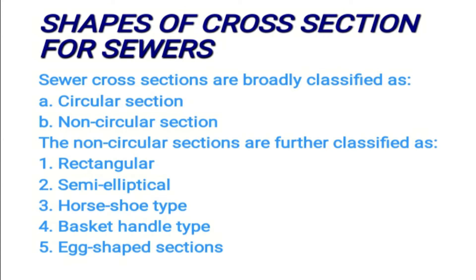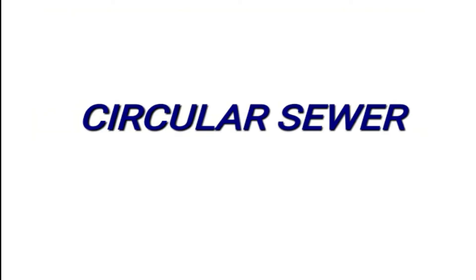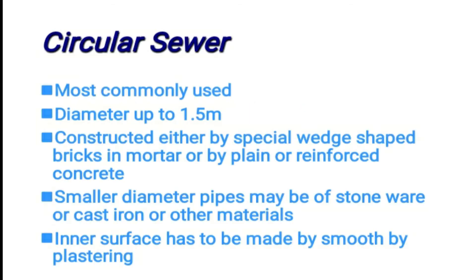Before looking at those five non-circular shapes in detail, first we can look at the circular sewer. The circular sewer is most commonly used and has a diameter up to 1.5 meters. These are constructed either by special wedge-shaped bricks in mortar or by plain or reinforced concrete.